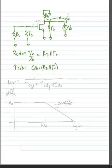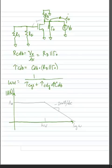Using the dominant pole approximation, our pole frequency omega_H equals 1 divided by (tau CGS + tau CDG + tau CDB). If we draw the magnitude response of the gain versus frequency, we see the gain starts at some value A0 at DC, reaches the pole frequency omega_H, and then starts to roll off at approximately minus 20 dB per decade.